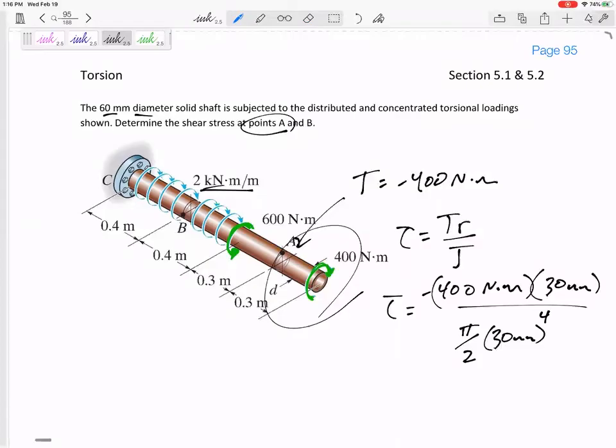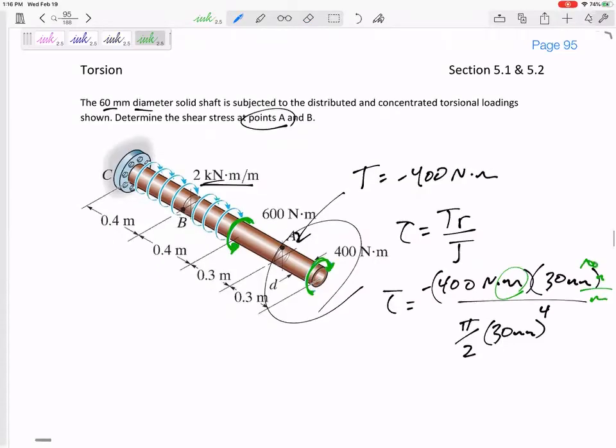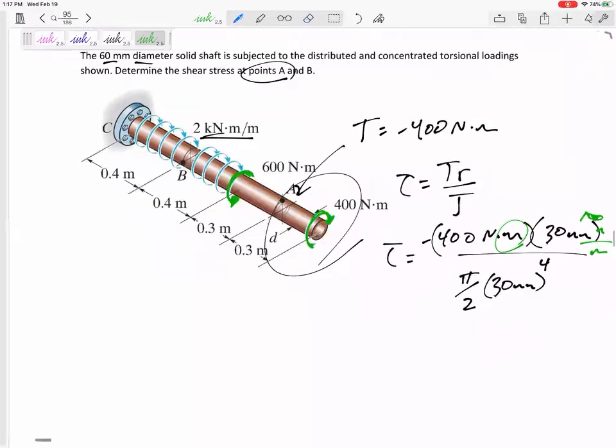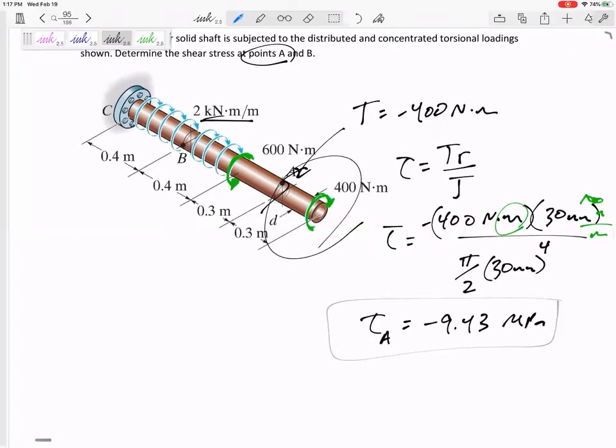This is J. J is pi by 2 R to the 4th. I think I need that meters. Change that to millimeters. A thousand. One more zero. And so this tau at A, which is at this cut on the outside edge, would be negative 9.43 MPa. And I may say in the problem statement, make sure your answer is positive or negative if I want you to specify a negative as opposed to just what's the magnitude of the stress.